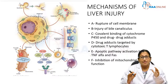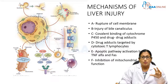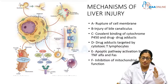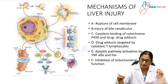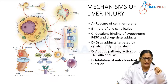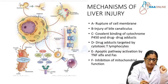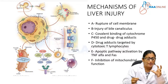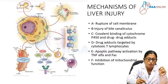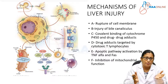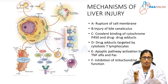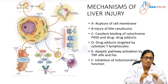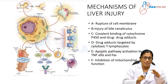There are six mechanisms of liver injury. The first is rupture of the cell membrane. On magnification you can see blebs that are formed on the membrane; these blebs rupture and ultimately the cellular elements are destroyed. Certain drugs directly cause toxicity to the cell membrane and destroy it.